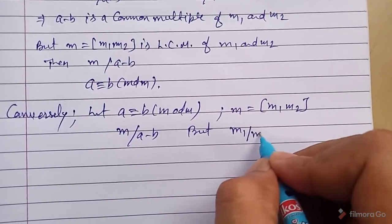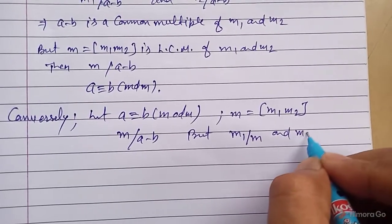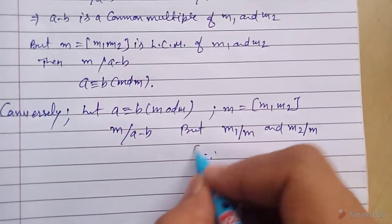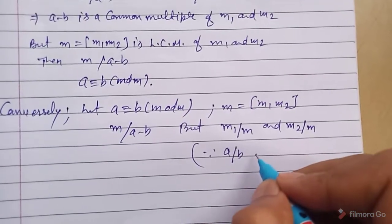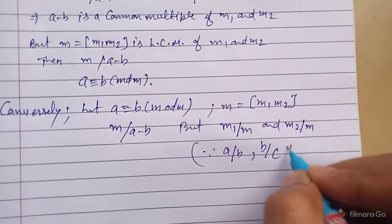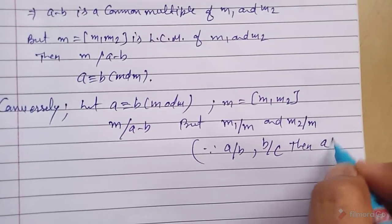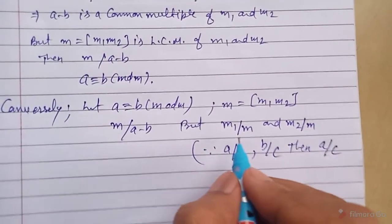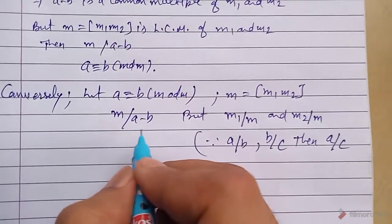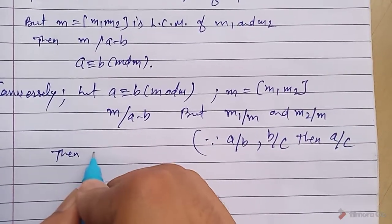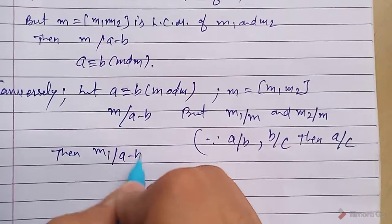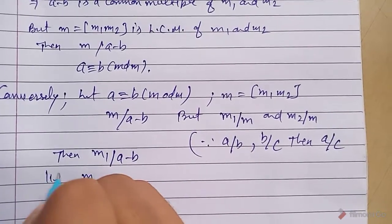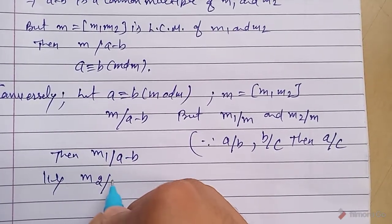Since m is the LCM, m1 also divides m and m2 also divides m. Using the transitive property: if a divides b and b divides c, then a also divides c. So from m1 divides m and m divides (a − b), we get m1 divides (a − b).